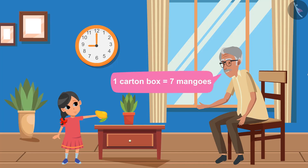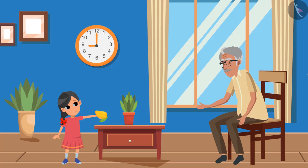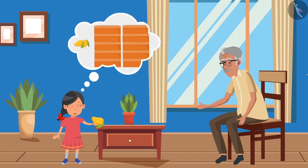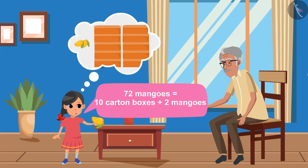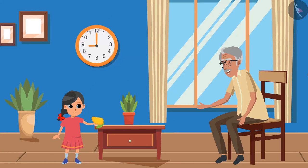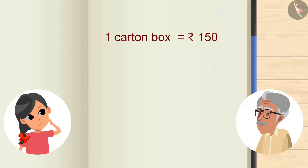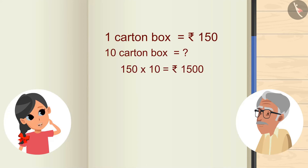We have 7 mangoes in this carton box. Yes, I remember it. Grandpa, we have packed mangoes in 10 carton boxes. Right. So, if the price of 1 carton box is ₹150, then what will be the price of 10 carton boxes? It will be 150 multiplied by 10, so the price will be ₹1,500. Absolutely right.